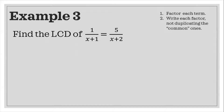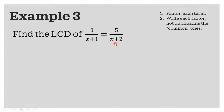How about if the denominators are different, just like in the third example? What should we do? I have here two simple steps which are helpful and easy to comprehend. First, we need to factor each term. Our denominators are x plus 1 and x plus 2, and these terms are completely factored, meaning no further factoring is possible.